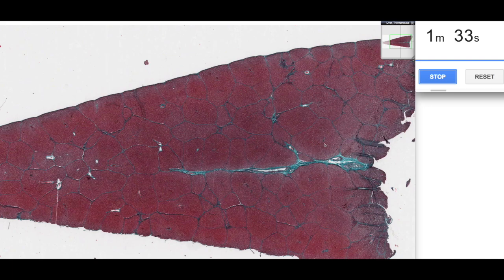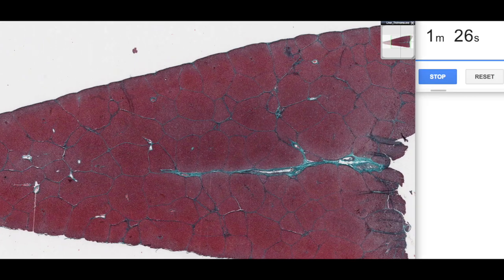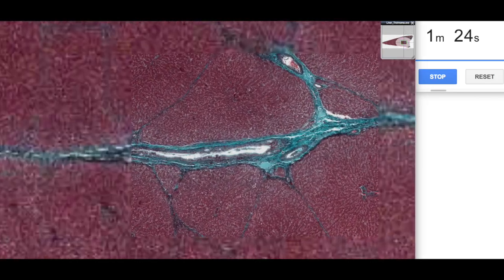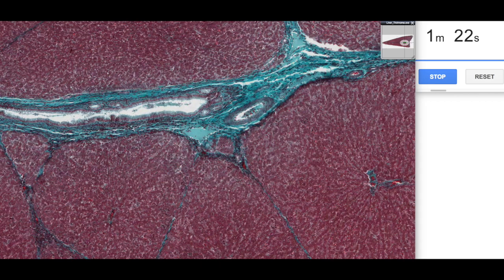So we can actually see evidence of this dual blood supply when we have a look at the connective tissue or the stroma of the liver. So if we zoom in to one of these areas, this area here is often referred to as the portal region or the portal triad because it usually contains at least three different structures.